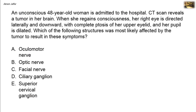An unconscious 48-year-old woman is admitted to the hospital. CT scan reveals a tumor in her brain. When she regains consciousness, her right eye is directed laterally and downward, with complete ptosis of her upper eyelid, and her pupil is dilated. Which of the following structures was most likely affected by the tumor to result in these symptoms?